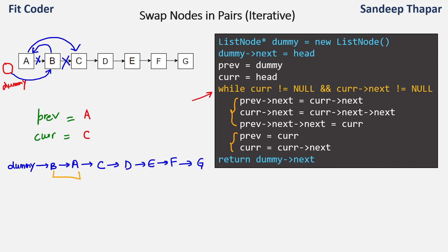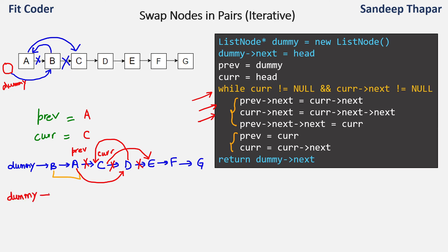We again enter the while loop. We set previousNext equal to currentNext, creating the link from A to D and breaking the A-to-C link. Then we set currentNext to currentNextNext, creating the link from C to E and breaking the C-to-D link. Then we set previousNextNext to current, creating the link from D to C. After this step the linked list is: dummy, B, A, D, C, E, F, G. Then previous moves to C and current moves to next of C which is E — we have swapped the pair CD to DC.